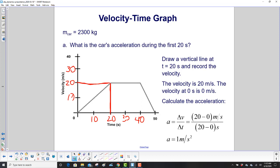The velocity is 20 meters per second. At time 0, it's 0 meters per second. So we use the definition of acceleration, which is the change in velocity over the change in time: (20-0)/(20-0). The units in the top are meters per second, the bottom are seconds. So we have an acceleration of 1 m/s².